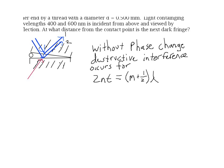Light containing wavelengths of 400 nanometers and 600 nanometers is incident from above and viewed by reflection. The question is, at what distance from the contact point will be the next dark fringe? The first dark fringe is right at the contact point, so we're looking for the dark fringe other than the one right there.